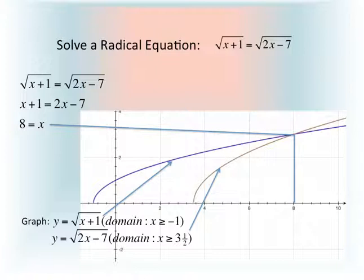We can also check this solution algebraically by substituting x equals 8 into the original equation. We get the square root of 9 is equal to the square root of 16 minus 7, which is also 9. So 3 equals 3.